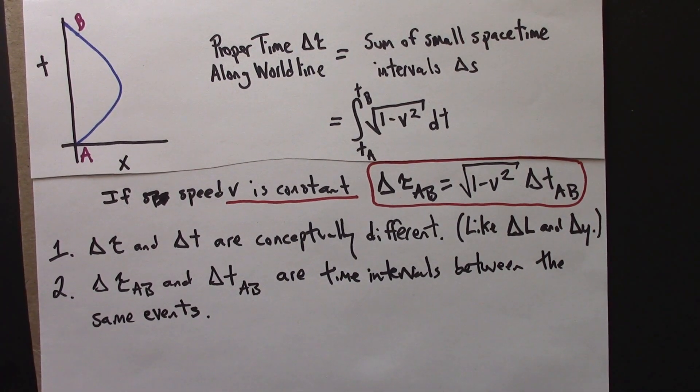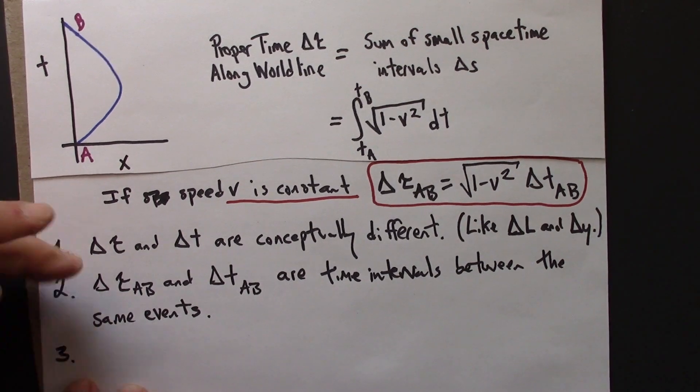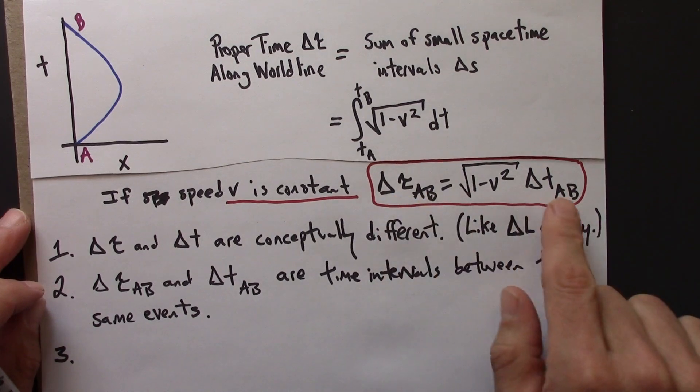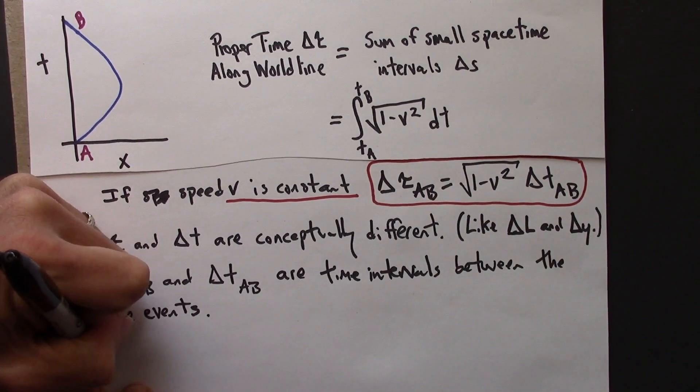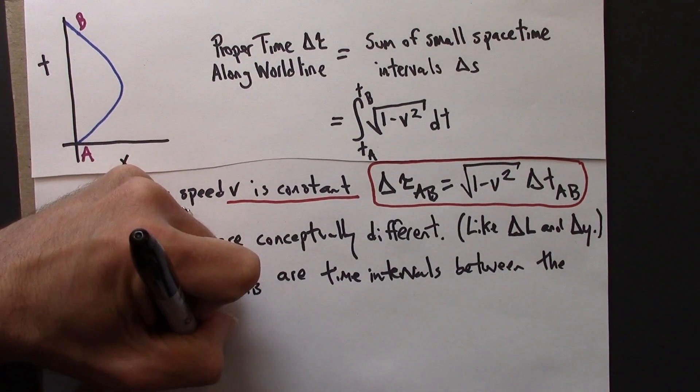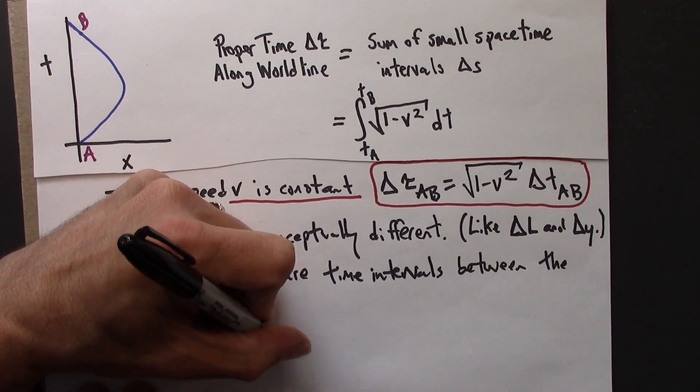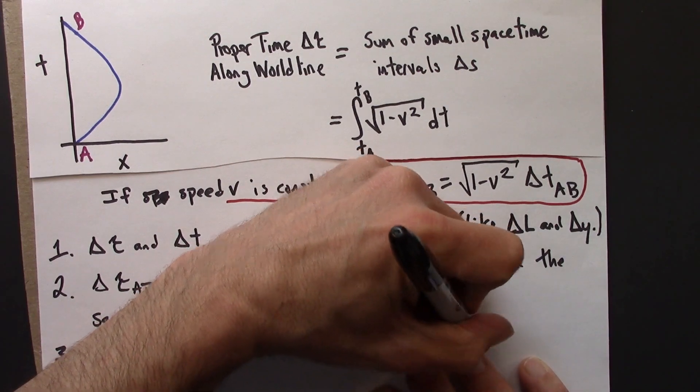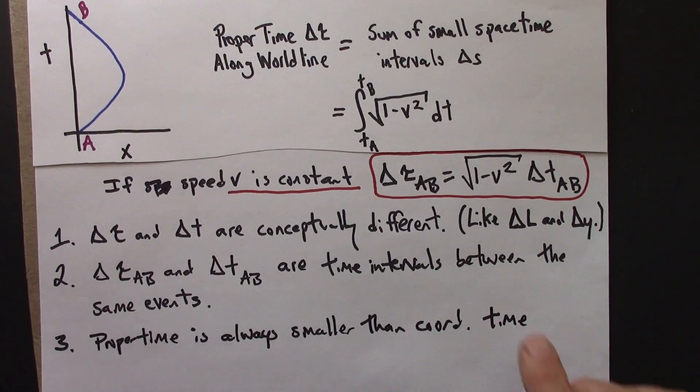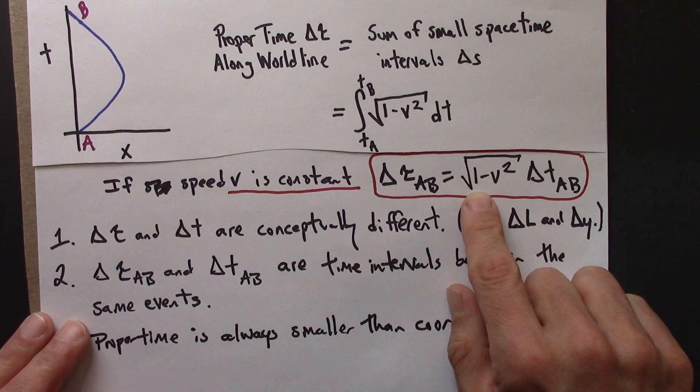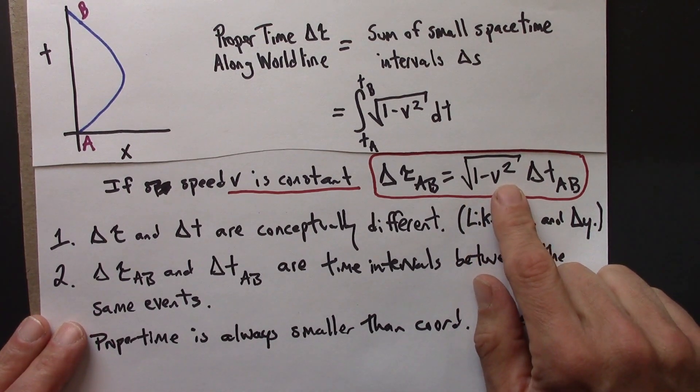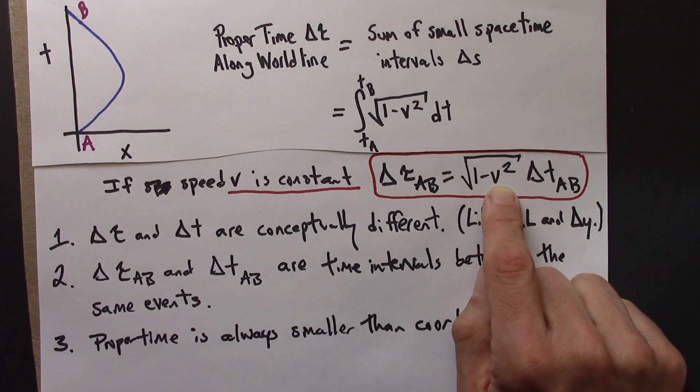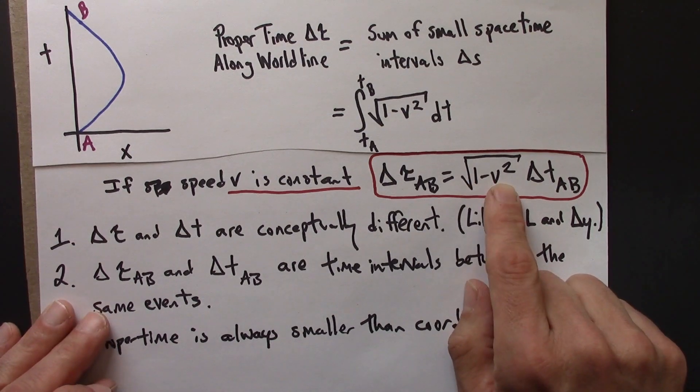And lastly, and perhaps most interestingly, this equation here tells us that the proper time between two events is always smaller than the coordinate time. Here's a way to see that. The quantity 1 minus v squared. We're using special relativity units, so v is never greater than 1. One is the speed of light. So speeds are always less than the speed of light.